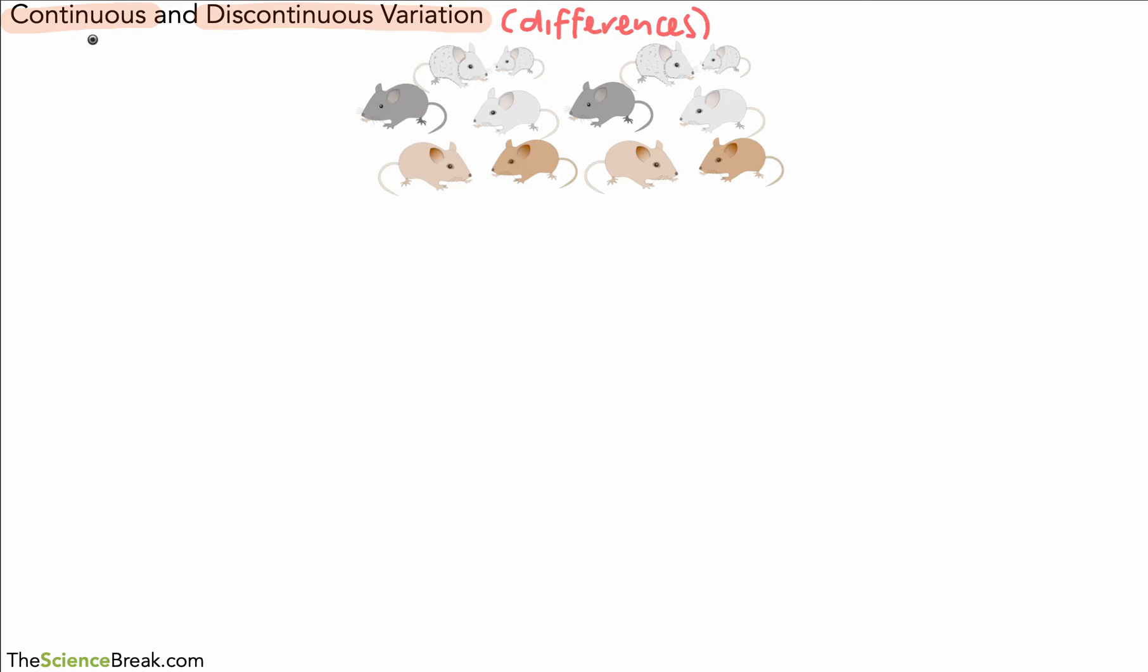Now the idea of continuous variation and discontinuous is another idea that we need to know about. So when we talk about continuous variation, we're talking about variation that we can measure with a numerical value or with numbers. Any variation that you measure as categories is called discontinuous variation.